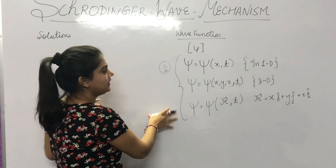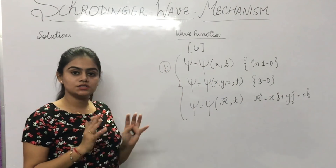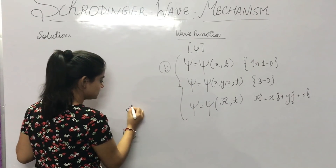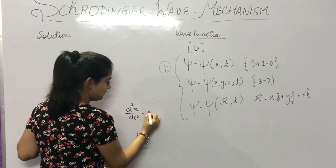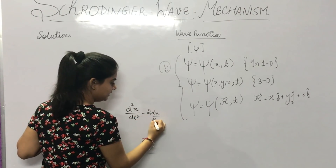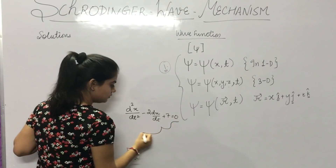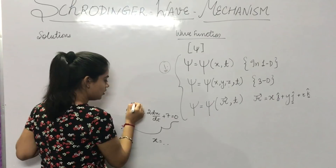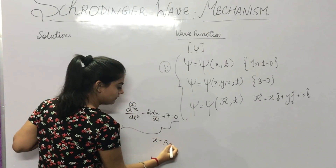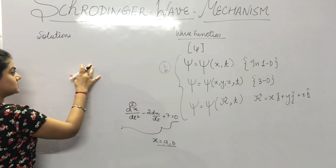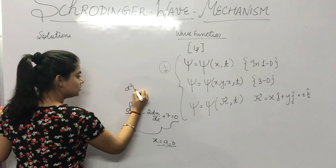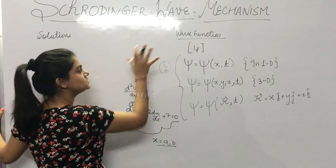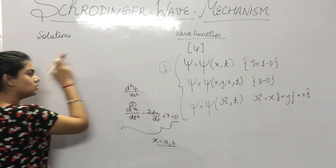The equation which has Psi in it — that is, the equation containing Psi as a function of position and time — will be known as the Schrödinger equation. For example, an equation of the form d-squared x upon dt-squared minus 2 dx by dt plus 7 equals zero is the type of equation whose solution leads to the Schrödinger equation.